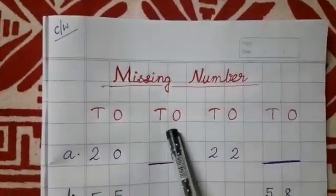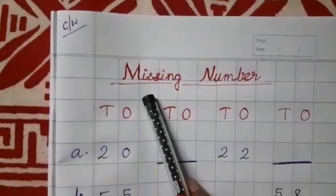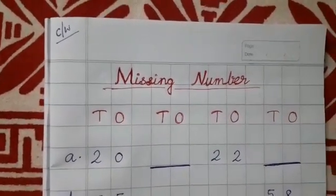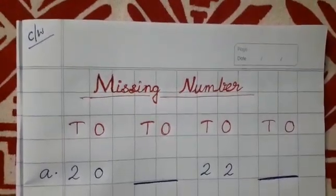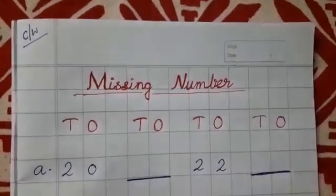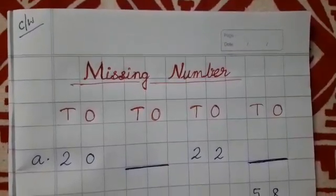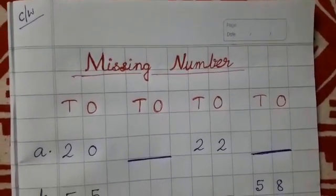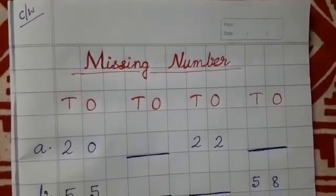After that you will write the heading. It is M-I-S-S, miss, I-N-G, ing, missing. N-U-M-B-E-R, number. Missing number.